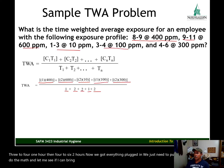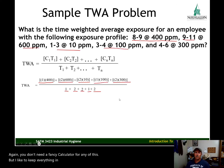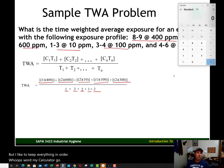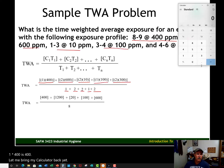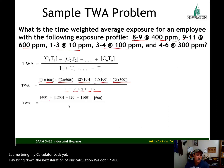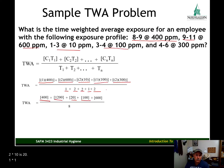Let me bring a calculator up on the screen. You don't need a fancy calculator for any of this. 1 times 400 is 400. 2 times 600 is 1,200. 2 times 10 is 20. 1 times 100 is 100. 2 times 300 is 600. Then we add up the time periods in the denominator: 1 plus 2 plus 2 plus 1 plus 2 equals 8.